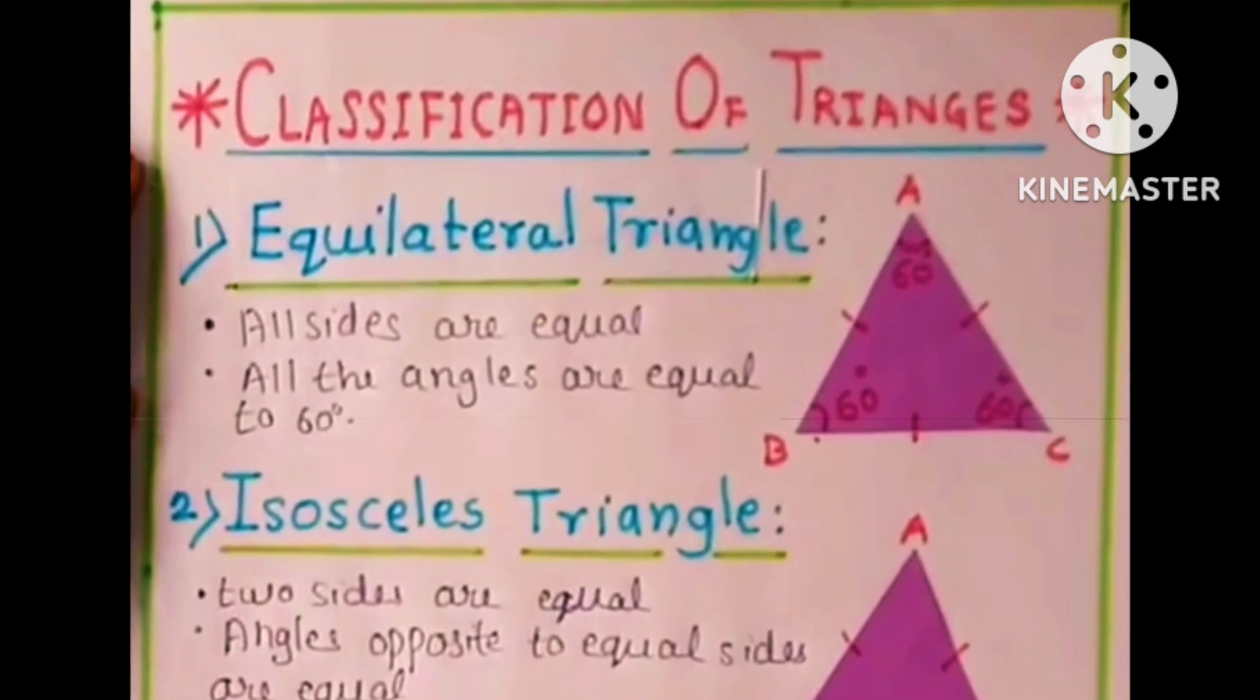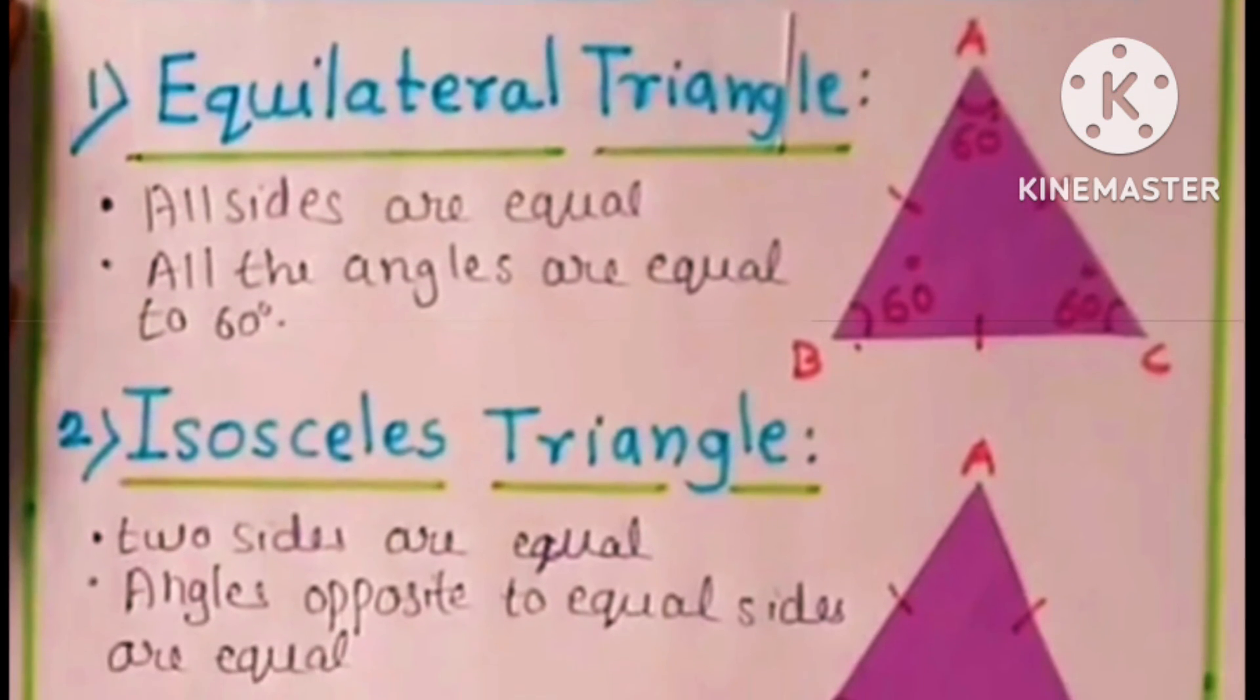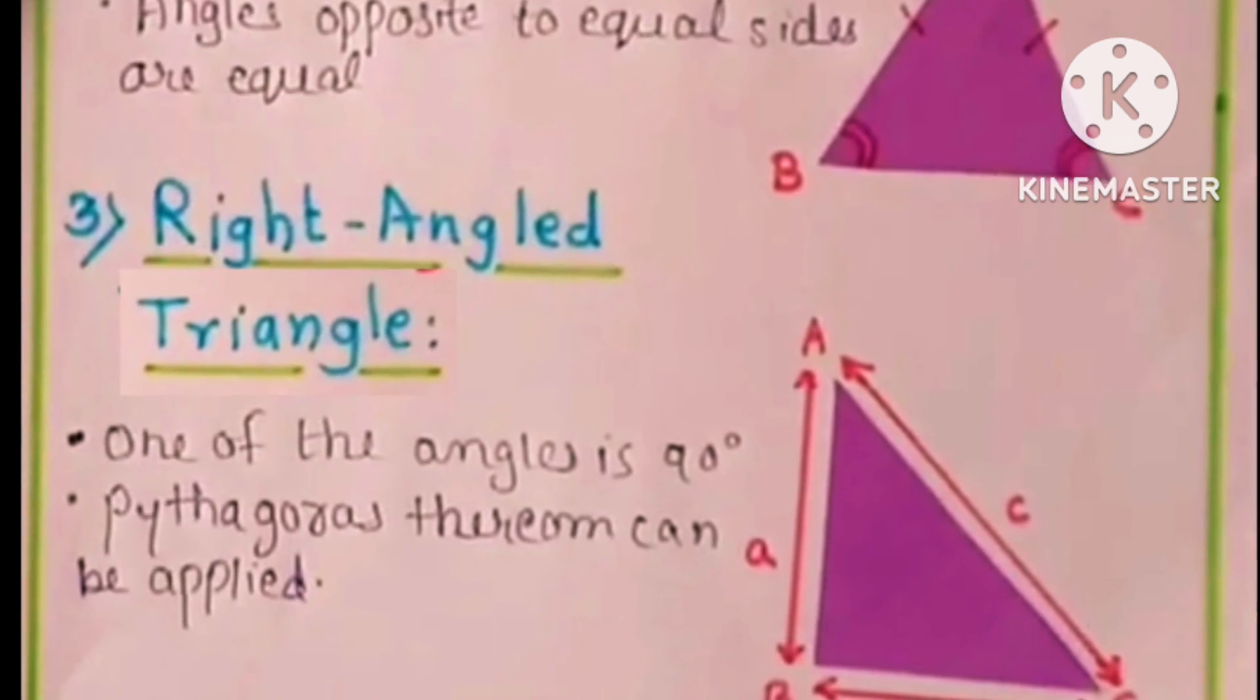The next page is classification of triangles. First one is equilateral triangle, second one is isosceles triangle, and third one is right-angled triangle.